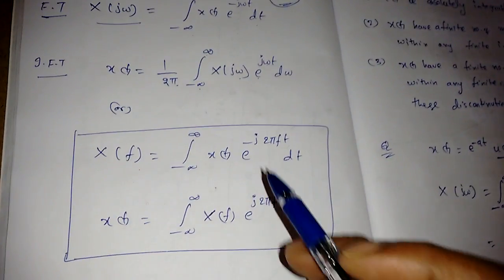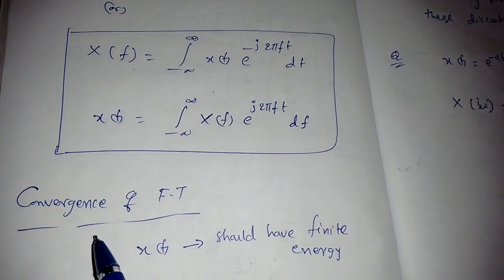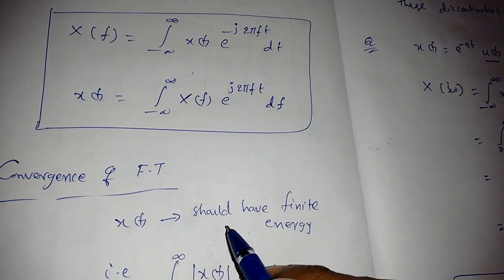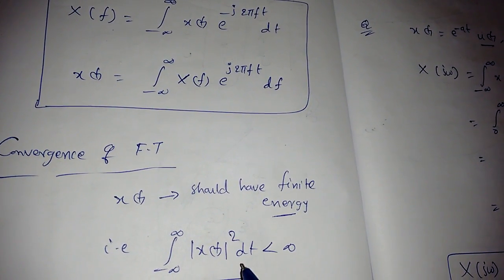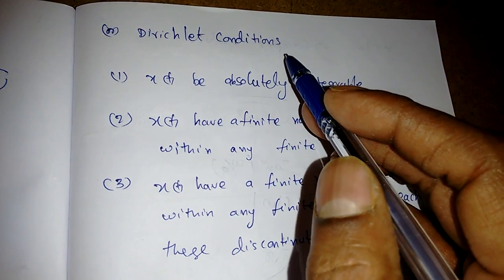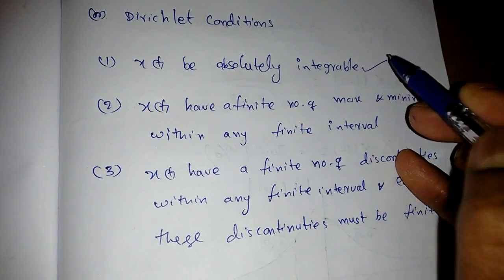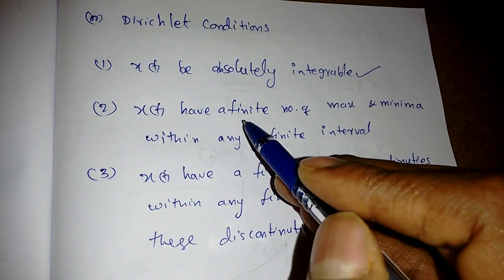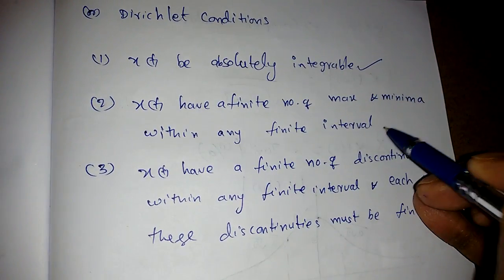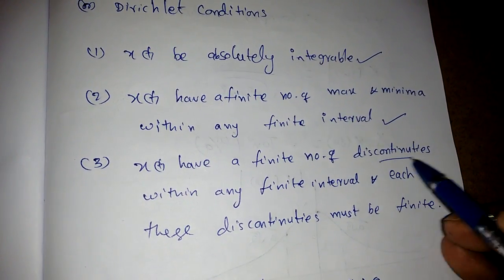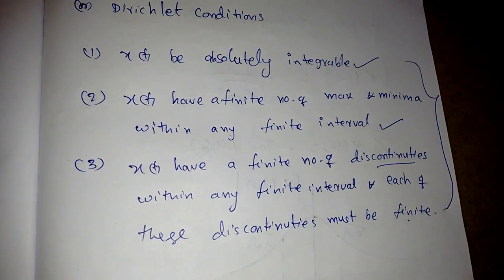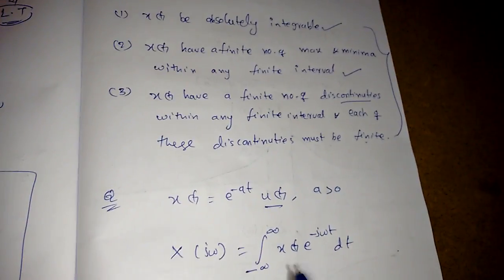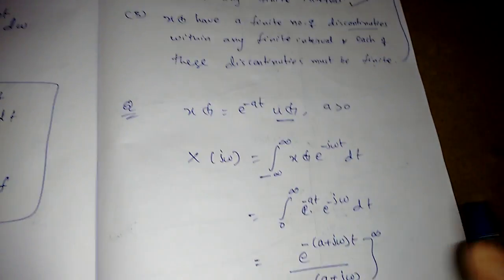For convergence of the Fourier transform, x(t) should have finite energy — meaning the integral of |x(t)|² from minus infinity to infinity must be less than infinity. Alternatively, x(t) must satisfy the Dirichlet conditions: x(t) must be absolutely integrable, have a finite number of maxima and minima within any finite interval, have a finite number of discontinuities, and each discontinuity must be finite.